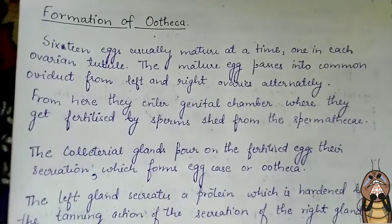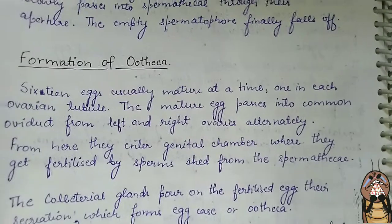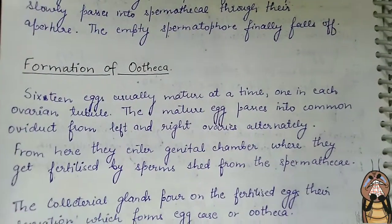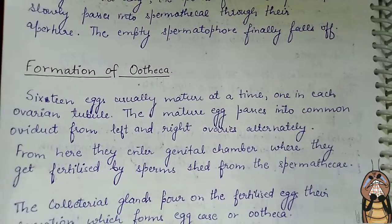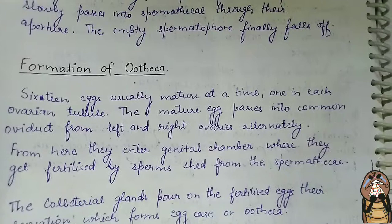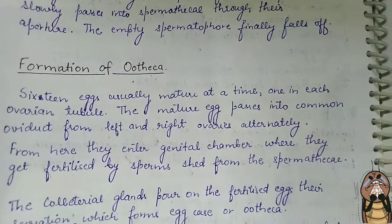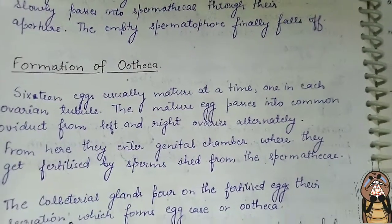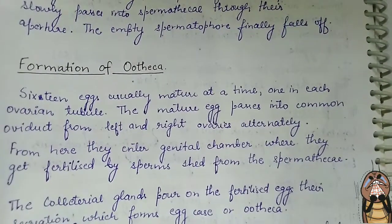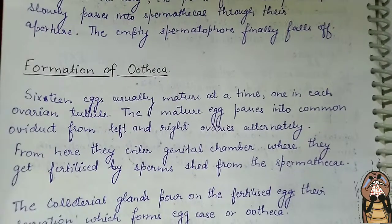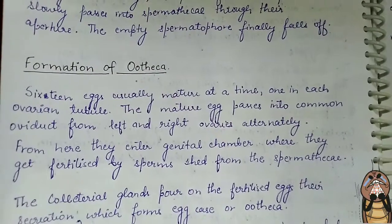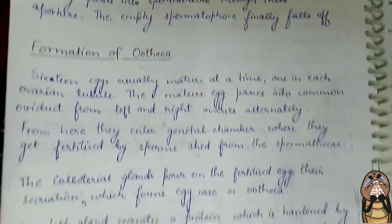Next is the formation of the ootheca. The spermatophore walls are formed by secretions of different glands, as studied in the previous video. After this, ootheca formation occurs, as studied in the female reproductive system of cockroach — the ootheca is formed by the secretion of the collateral gland, which includes the branched right and left collateral gland, present in the brood pouch of the female.